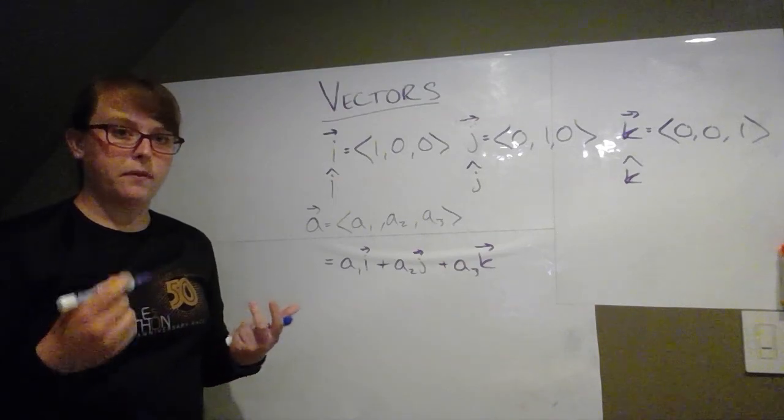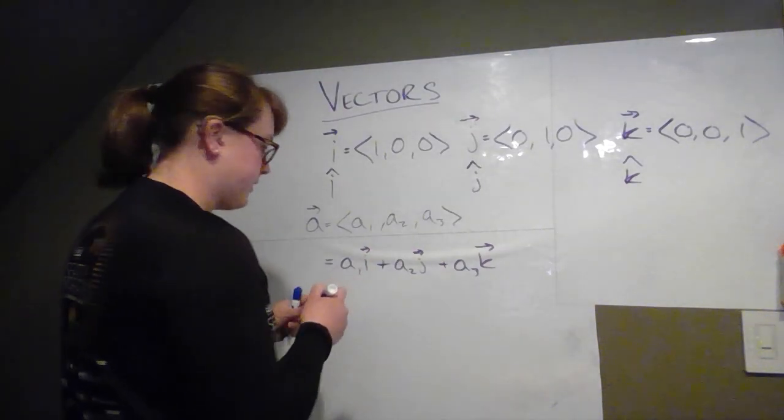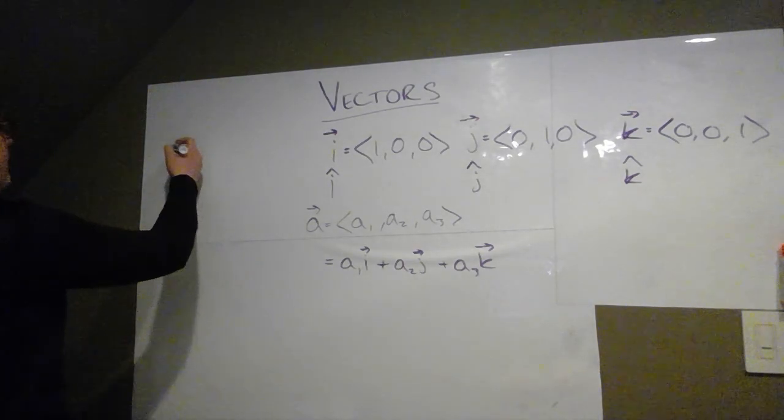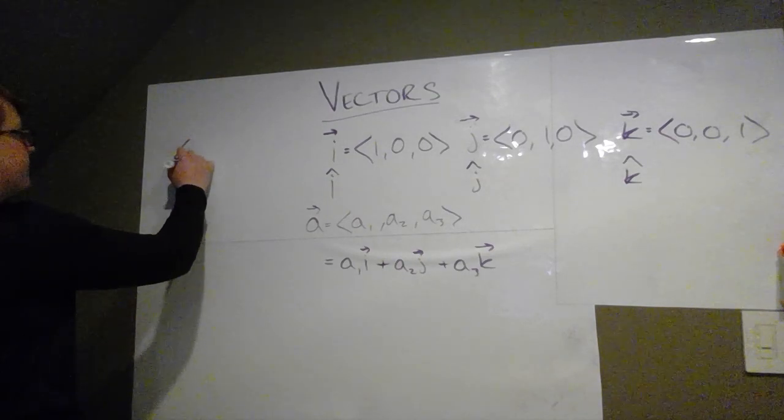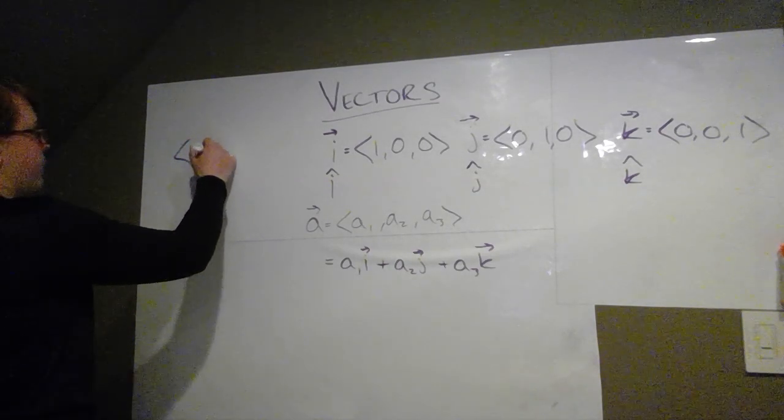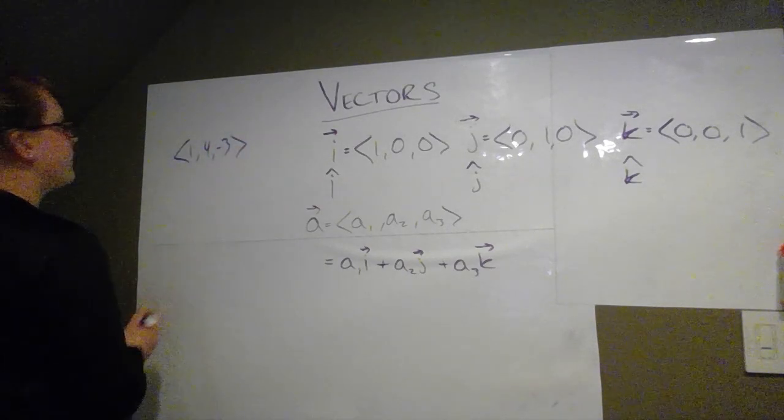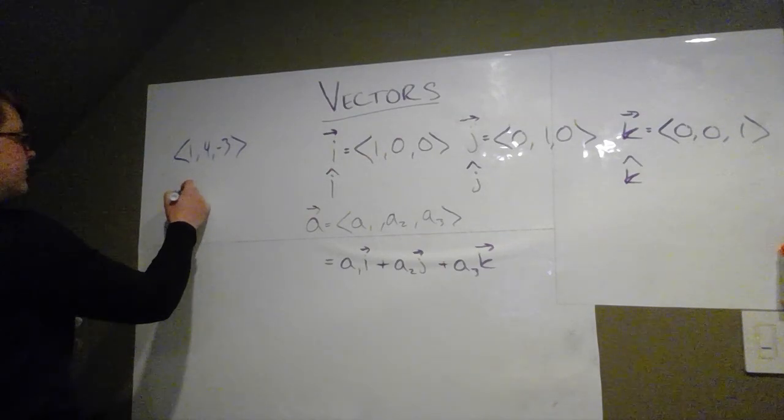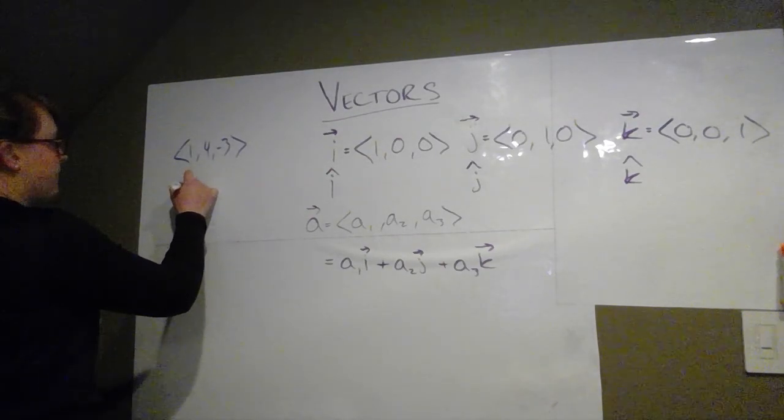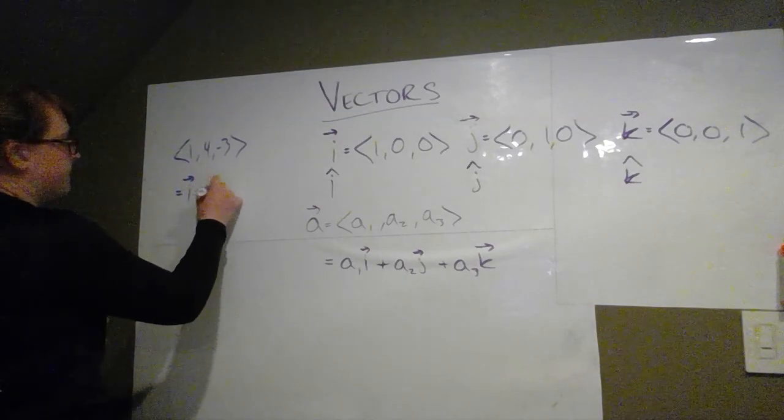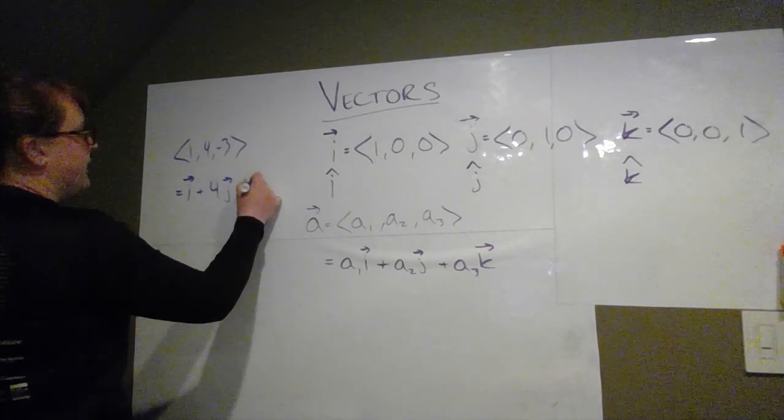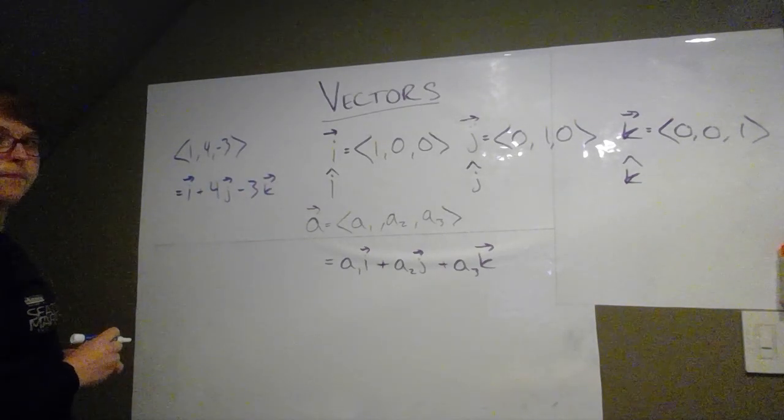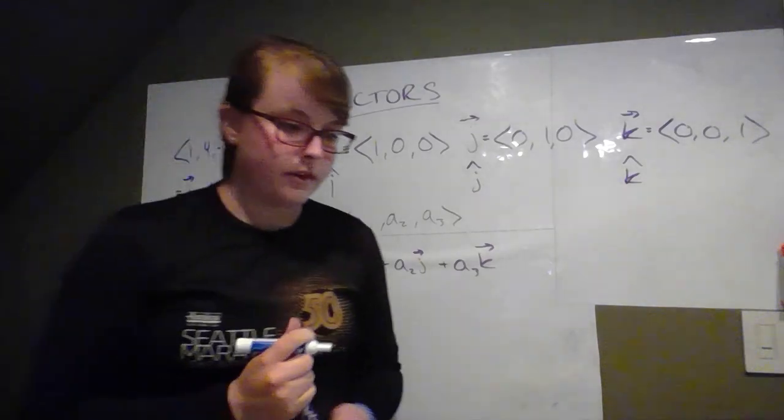Okay, so if we were going to do this with an actual vector that has actual numbers, let's see, let's do it over here. Let's say we had a vector 1, 4, negative 3. So to write this vector in terms of i, j, and k, all we would do is go that's equal to i plus 4j minus 3k.